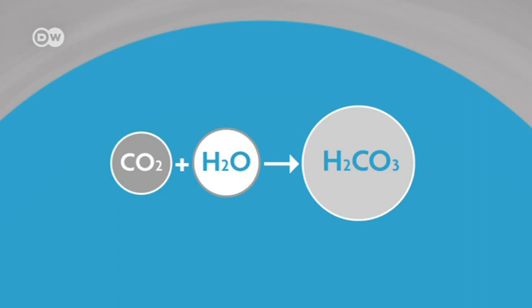By the end of the 21st century, scientists say pH levels will have dropped lower than at any other time in the 650,000 years that preceded the industrial revolution.